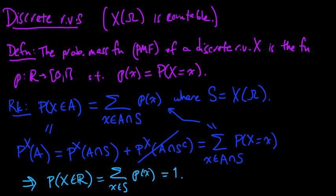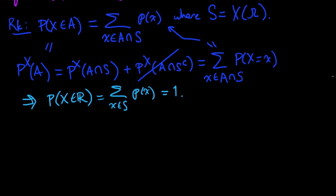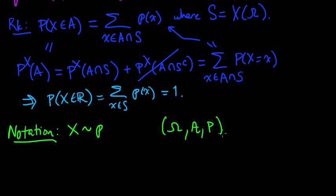So now, let me continue and make some notational comments. So when we're working with random variables, for a discrete random variable X, we often write X tilde little p to mean X is distributed according to the PMF little p. When we do this, we're assuming that there's some underlying probability measure space, omega, sigma algebra A, and probability measure P, and that X is a random variable on this space which gives rise to this probability mass function.